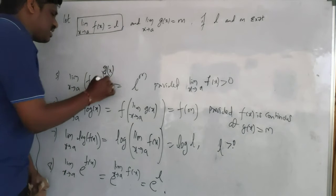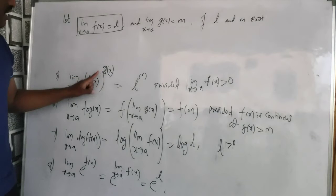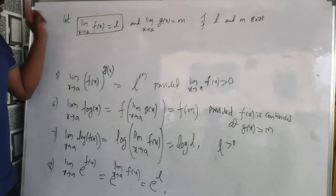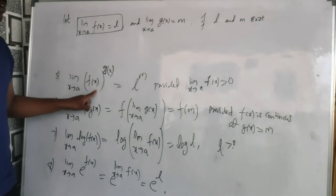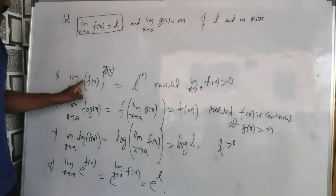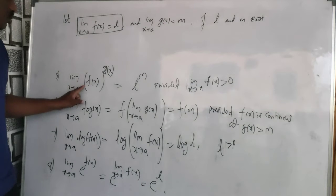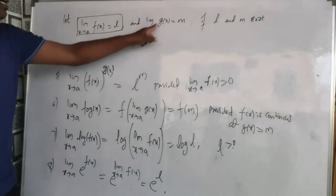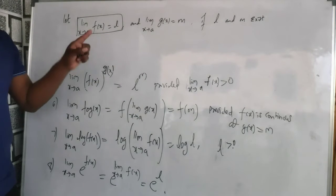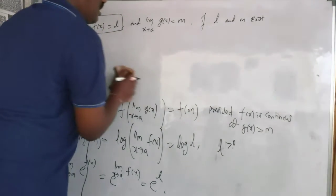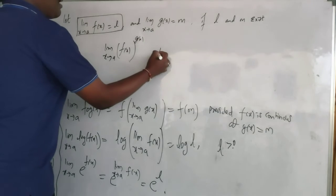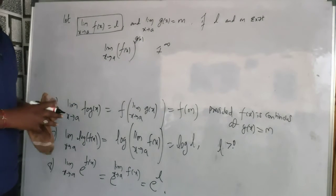The fifth property: limit extending to a of f(x)^g(x). Provided f(x) is greater than 0, I can find limit extending to a of f(x) — call that l — and limit extending to a of g(x) — call that m. So the answer is l^m. There is also a special case when you have the 1^∞ form; those problems are different and very important for IIT — I will explain that later.